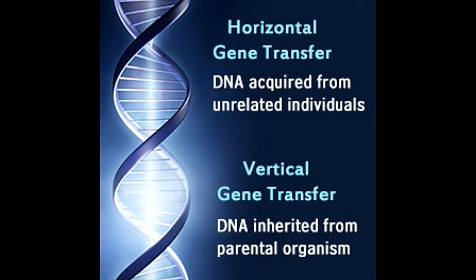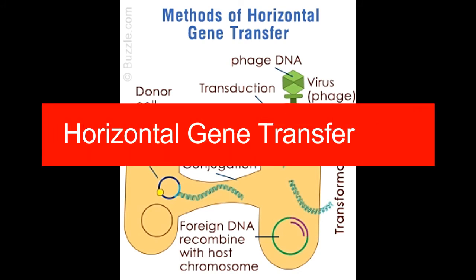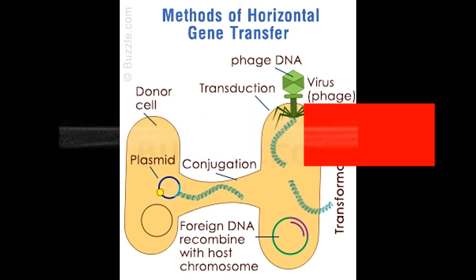The terms horizontal and vertical refer to the generation of the cells involved. When a gene is transferred between individuals of unrelated generations, it is said to be a horizontal transfer. When the gene is passed on from a parental organism to its own progeny, it is said to be vertical.